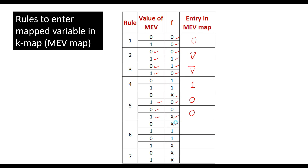Rule 6: if function value is 0 when MEV is 0, and function value is 1 when MEV is 0, and vice versa — if function value is 1 when MEV is 0 and function value is don't care when MEV is 1, or MEV is 1 and function is 1 and function is don't care — in that case we enter don't care (X) in the MEV map. We are supposed to follow these rules while entering the variables into the MEV map.